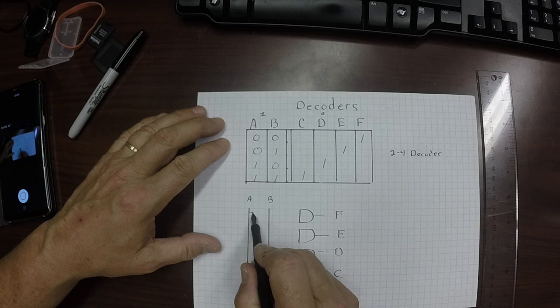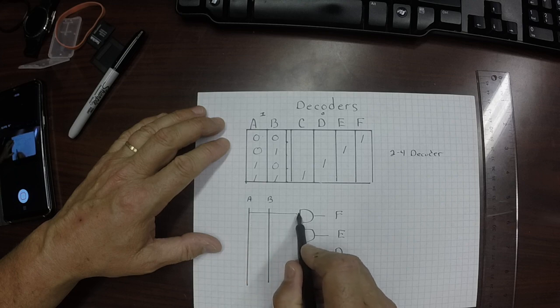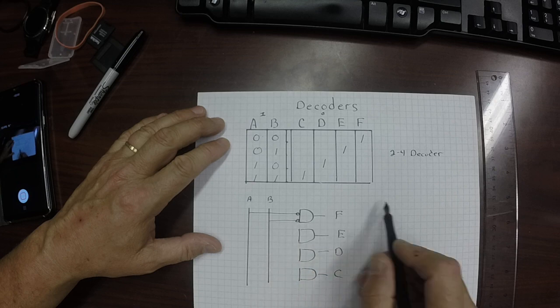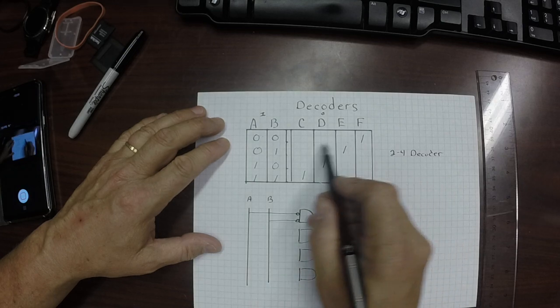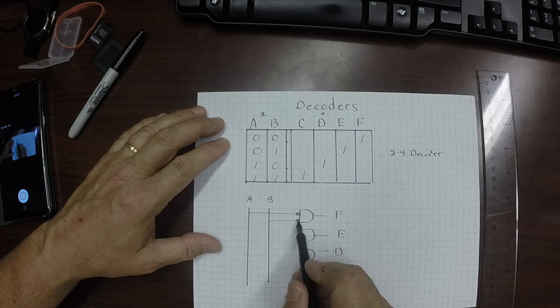So we're going to bring the A in, and we're going to negate it. And then we're going to bring a B in, and we're going to negate it. So 1 will be turned on here if both A and B are 0s, because we're going to reverse them.